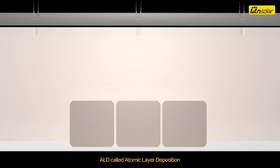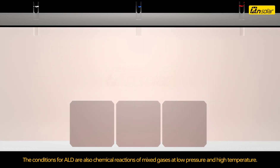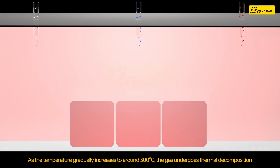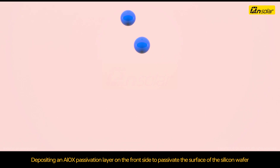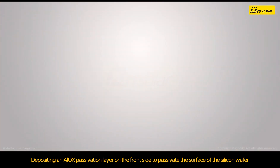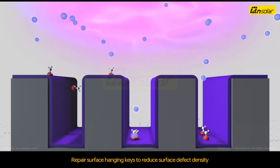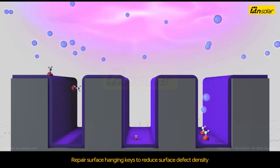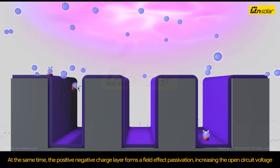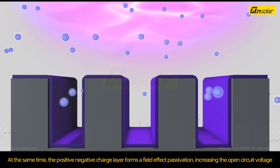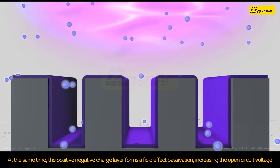ALD, called atomic layer deposition, involves chemical reactions of mixed gases at low pressure and high temperature. As temperature gradually increases to around 300 degrees, the gas undergoes thermal decomposition, depositing an AlOx passivation layer on the front side to passivate the surface of the silicon wafer. This repairs surface dangling bonds to reduce surface defect density. At the same time, a positive-negative charge layer forms a field-effect passivation, increasing the open-circuit voltage.